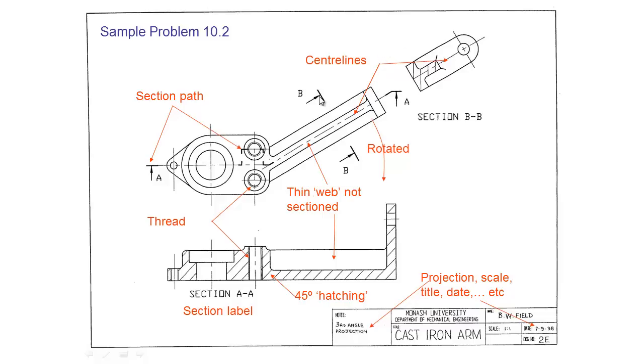So we've got our section where we've sectioned here so we've labelled that. Now if we were to have the arrows on the other side and have this section as a third angle projection that would mean we would have to move this section all the way down to about here where my mouse is now.